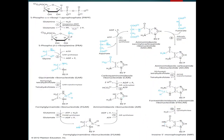The salvage biosynthetic pathway starts from a precursor 5-phospho-D-ribosyl-1-pyrophosphate, which we call PRPP. It is converted into phosphoribosylamine. The enzyme for this process is glutamine PRPP-amidotransferase, which converts water and inorganic phosphate to two inorganic phosphate molecules and glutamate.